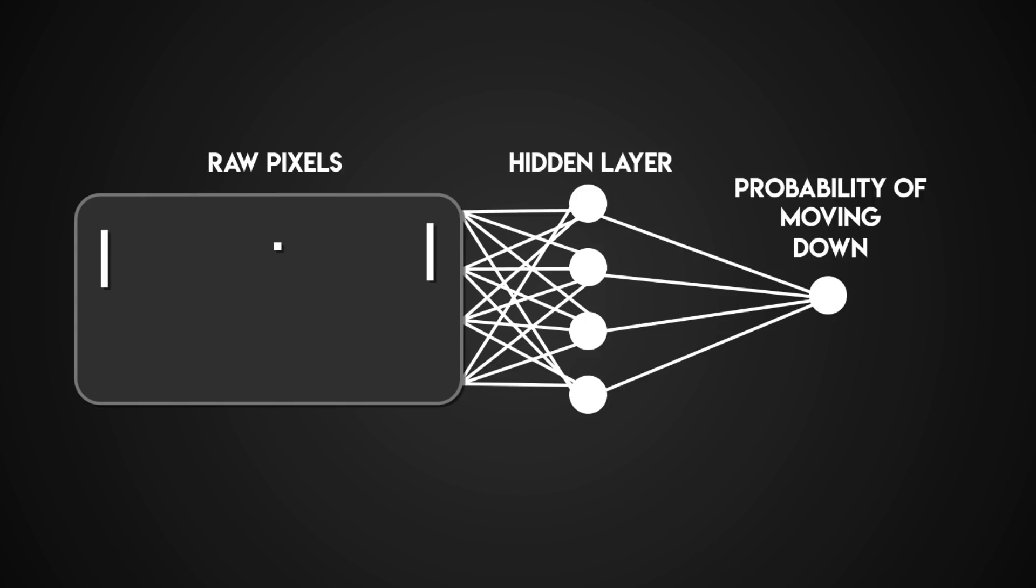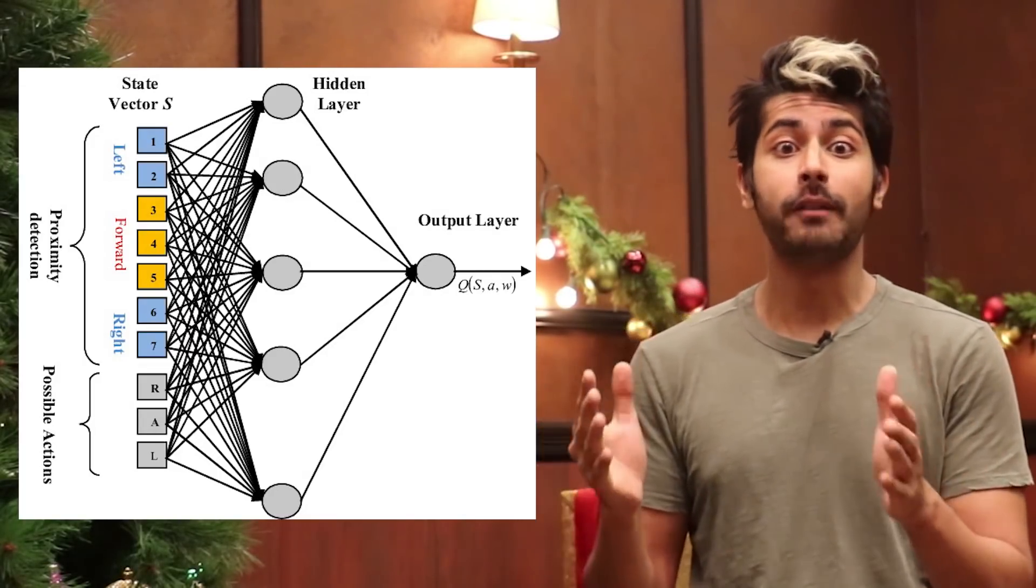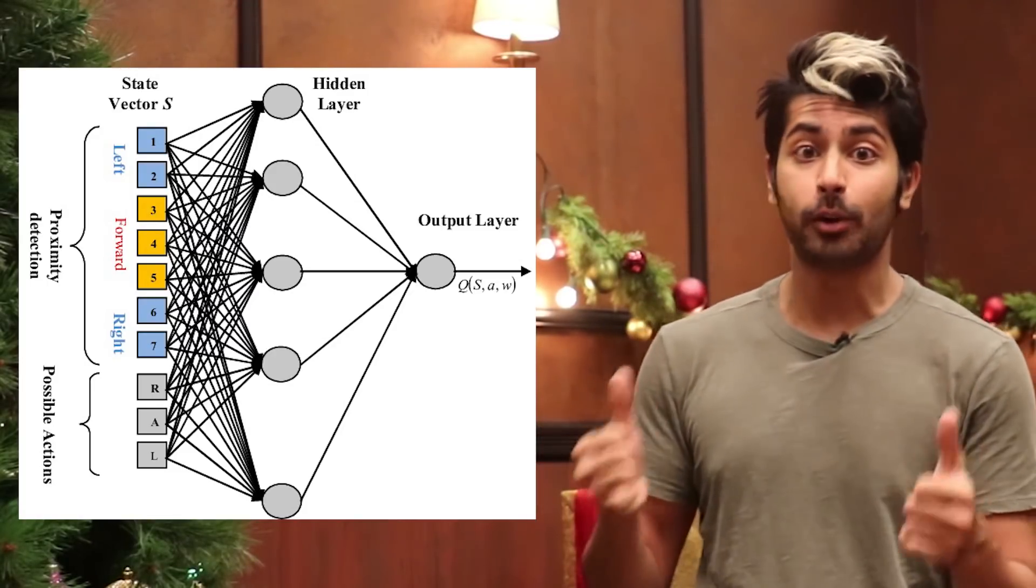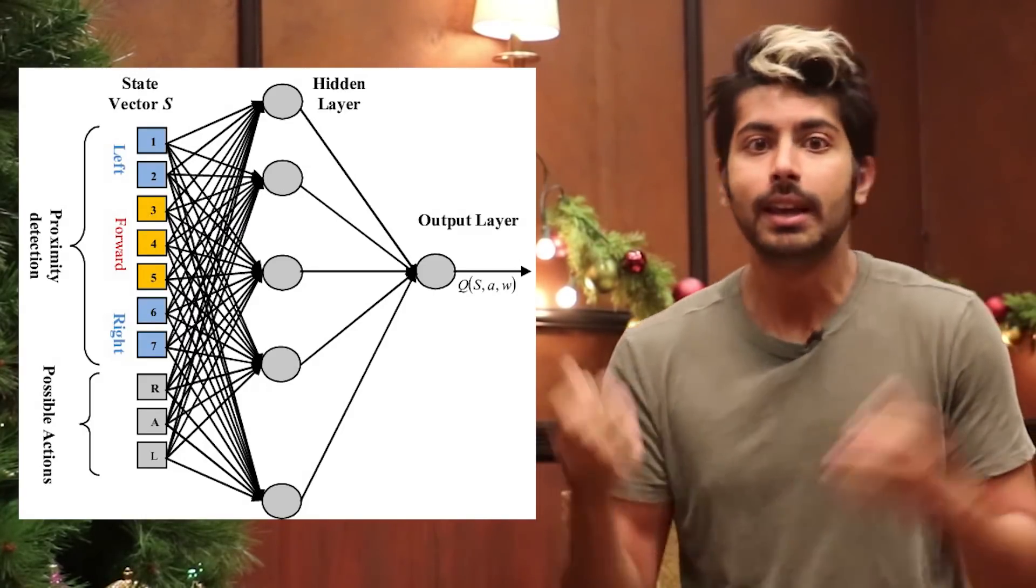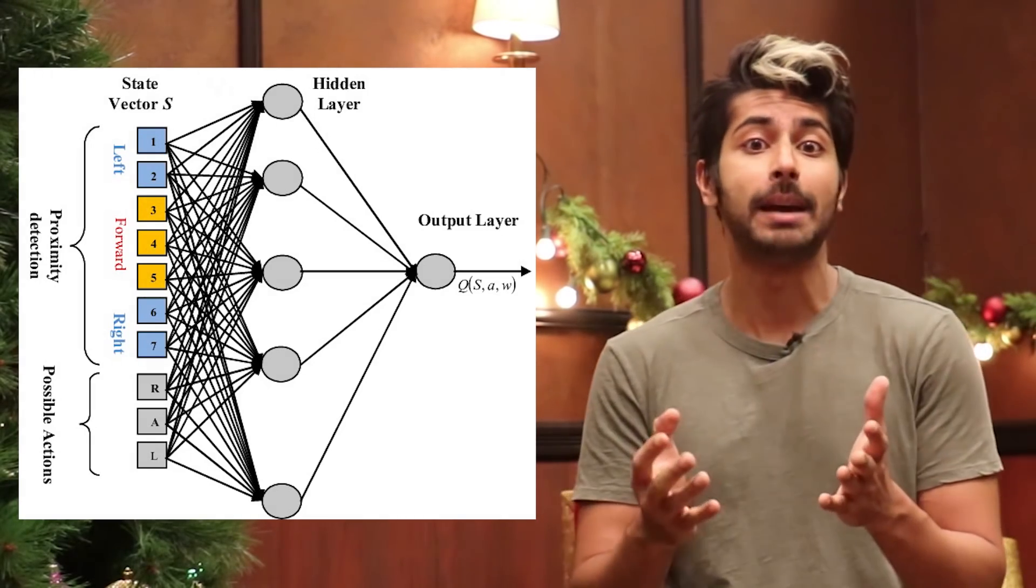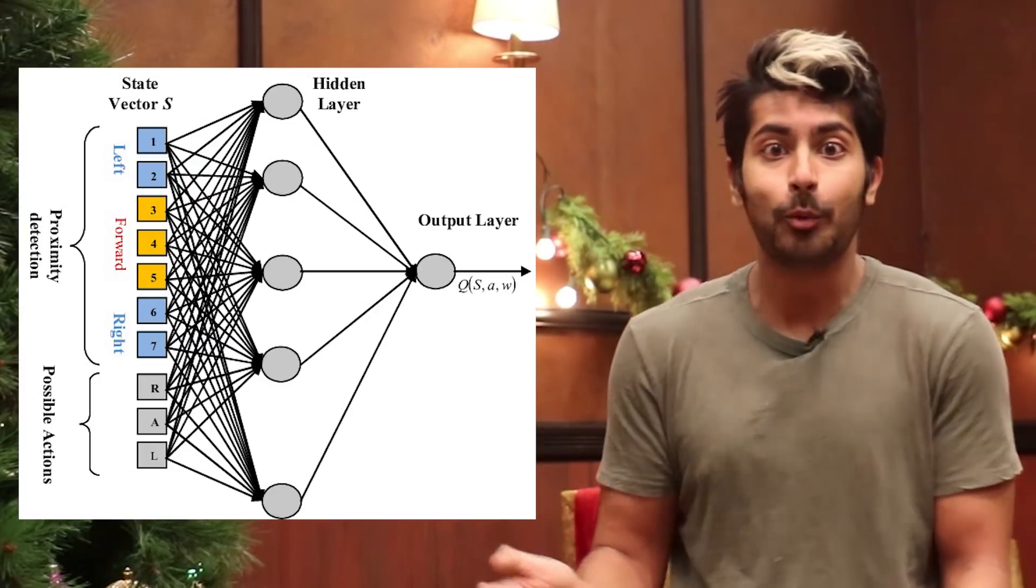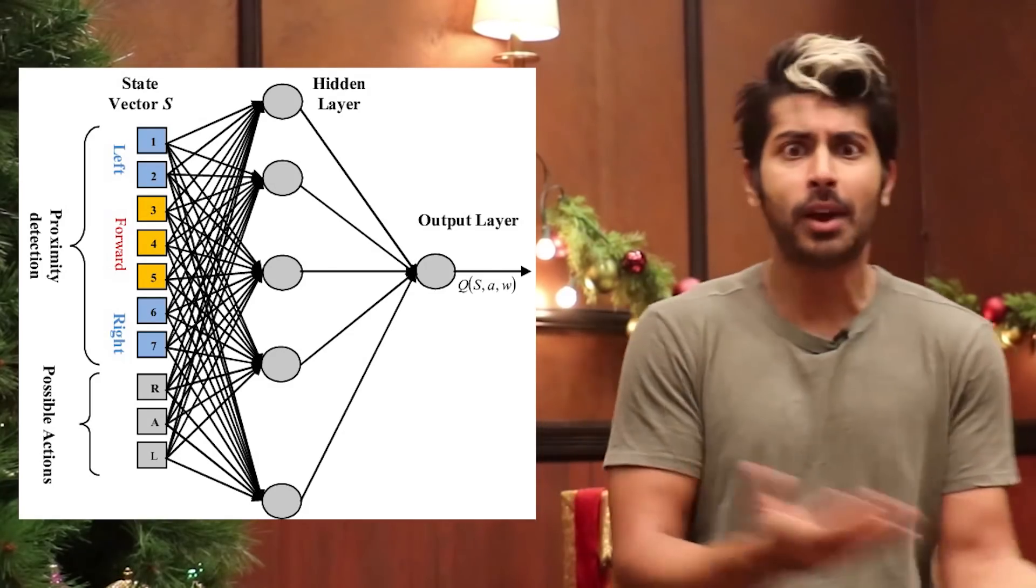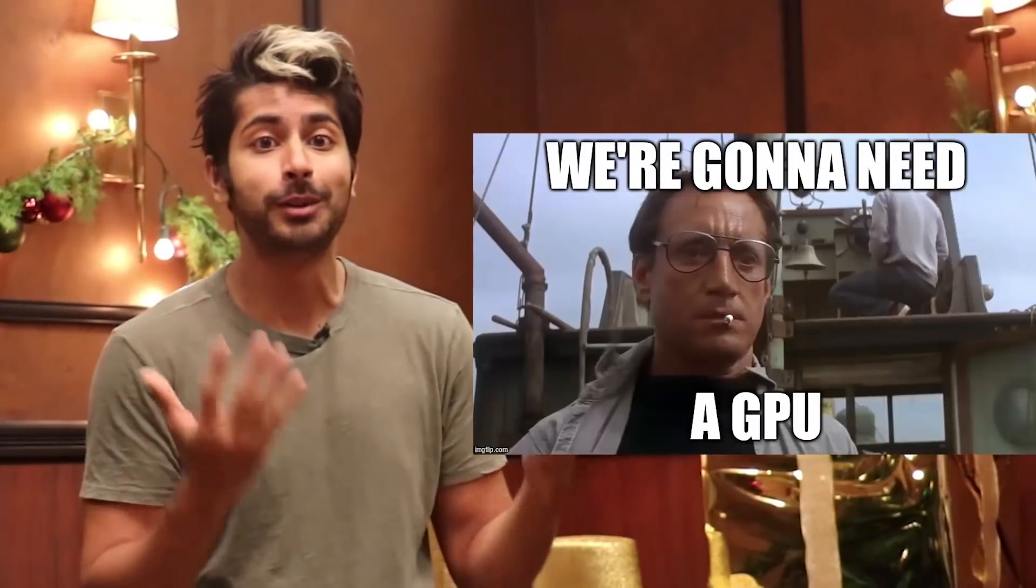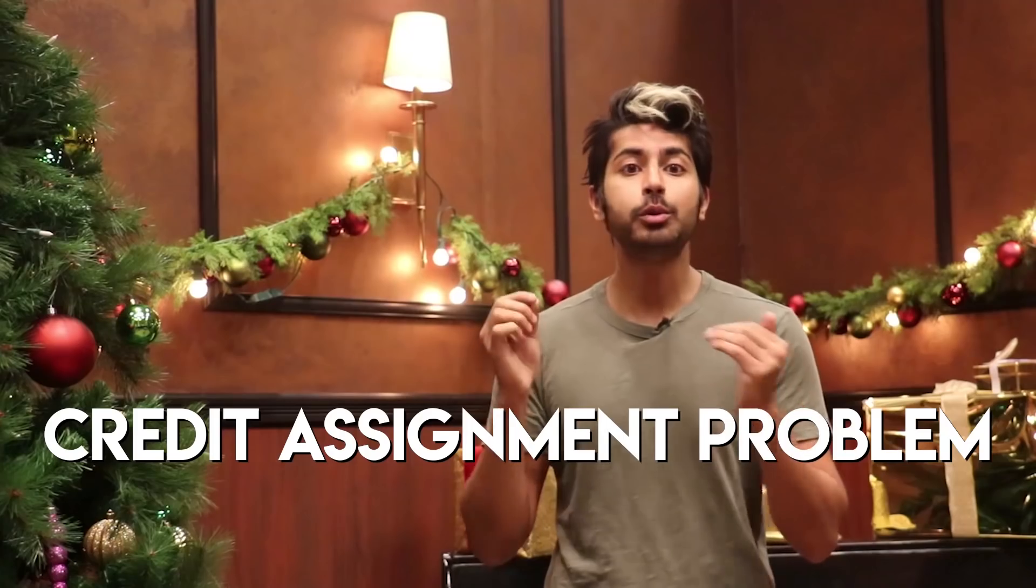Think about how difficult this problem is for a second. We're getting about 100,800 numbers and forward our policy network, which can easily involve on order of a million parameters for both layers. If we decided to go up for a given time step, the game could return a zero reward and give another 100,800 numbers for the next frame. It's possible we could repeat this process 100 time steps before getting any non-zero reward. If we finally get a plus one, how can we tell what made that happen? Was it some move we played just recently or 40 frames ago? Maybe it had something to do with frame 12 and then frame 38? Which of the million knobs of our neural network should we change and how in order to do better in the future? This is a common problem in reinforcement learning called credit assignment.